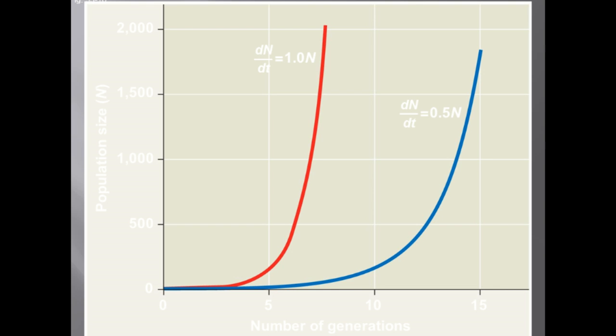Exponential population growth is population increase under idealized conditions. Under these conditions, the rate of reproduction is at its maximum — called the intrinsic rate of increase. Write that down. This produces the J-shaped curve, and the J-shaped curve of exponential growth characterizes some rebounding populations — for example, plants re-growing after a fire would show this pattern at the beginning.